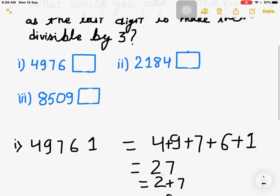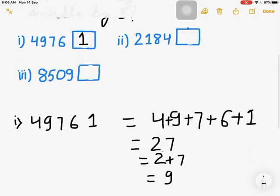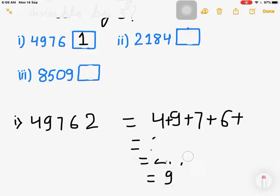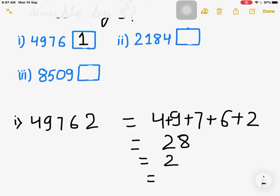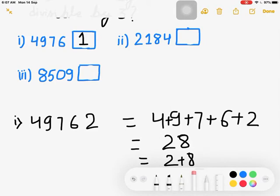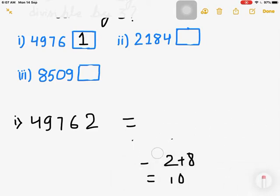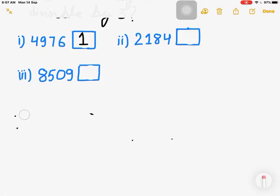You can try other digits also. If you try adding digit 2, then 26 plus 2 is 28, and 2 plus 8 is 10, so it is not divisible by 3. You can check for digit 3 also by adding digit 3 in the same way. Now let's go to option 2.